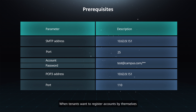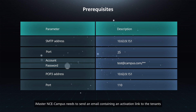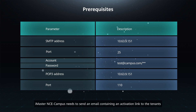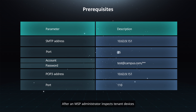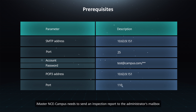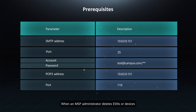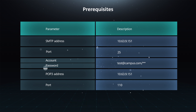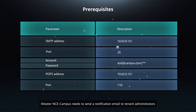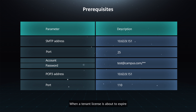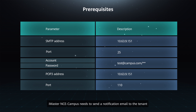When tenants want to register accounts by themselves, iMaster NCE Campus needs to send an email containing an activation link to the tenants. After an MSP administrator inspects tenant devices, iMaster NCE Campus needs to send an inspection report to the administrator's mailbox. When an MSP administrator deletes ESNs or devices, iMaster NCE Campus needs to send a notification email to tenant administrators. When a tenant license is about to expire, iMaster NCE Campus needs to send a notification email to the tenant.